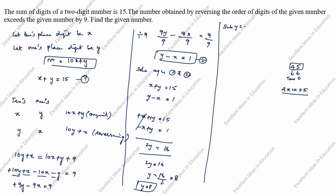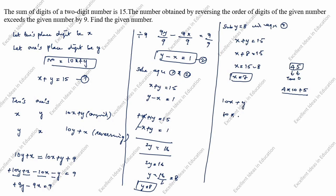Substitute y equals 8 into equation 1. x plus 8 equals 15, so x equals 7. The original two-digit number is 10x plus y: 10 into 7 plus 8 equals 70 plus 8 equals 78.